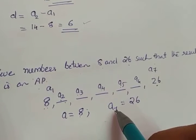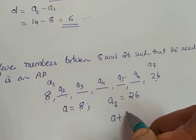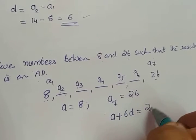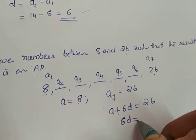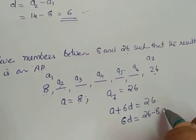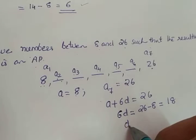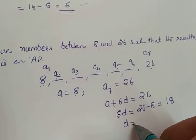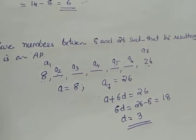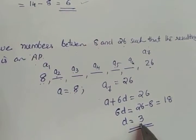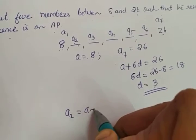Using the formula, a7 = a + 6d = 26. Since a = 8, we get 6d = 26 - 8 = 18, so d = 18/6 = 3. We now have both a and d.